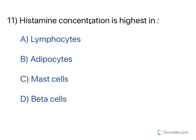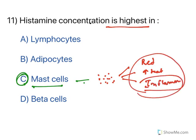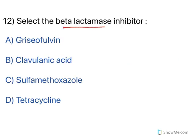Histamine concentration is highest in mast cells. The lungs and the tissue under the skin have an abundant supply of mast cells. Any slight irritation releases granules containing histamine, which causes the classic signs of inflammation — redness, heat increase — and in the lungs, bronchoconstriction. Mast cells contain the highest amounts of histamine.